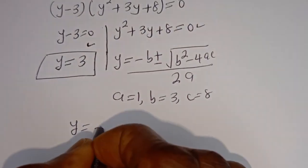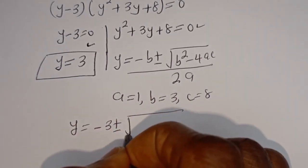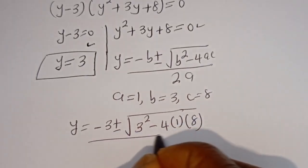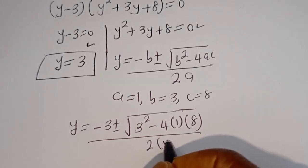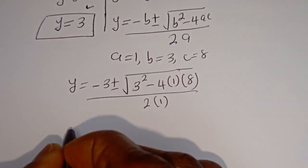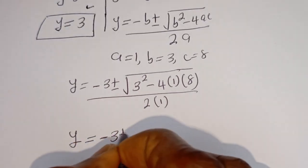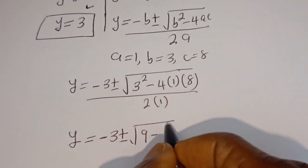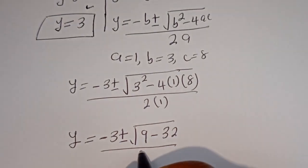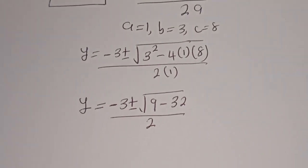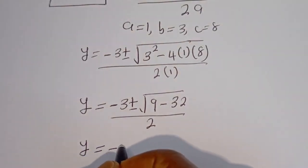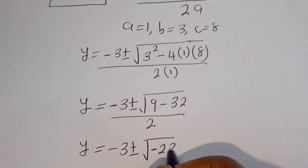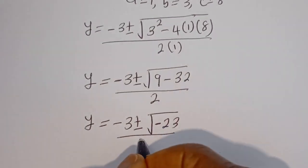So y is equal to minus 3 plus or minus square root of 3 squared minus 4 times 1 times 8, all over 2. That gives y equals minus 3 plus or minus square root of 9 minus 32, which is square root of minus 23, over 2.